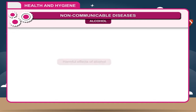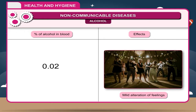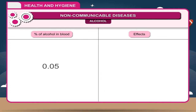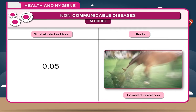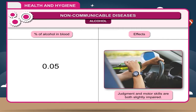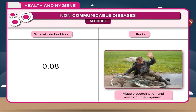Harmful effects of alcohol — percentage of alcohol in blood and effects: At 0.02%, mild alterations of feelings and slight intensification of moods. At 0.05%, feelings of relaxation, giddiness, lowered inhibitions; judgment and motor skills are both slightly impaired. At 0.08%, muscle coordination and reaction time are impaired.